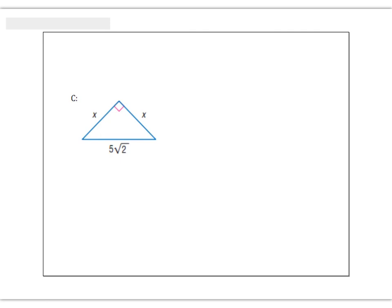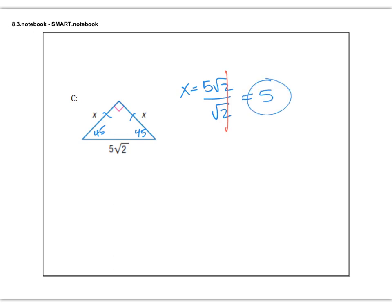Let's try one more. Again, I see the two sides are congruent because they're both length x, which means the two corners have to be 45 degrees and 45 degrees. I'm going to have to work backwards — we're given the hypotenuse. So we're going to take 5 root 2 divided by root 2. When we work backwards, we divide. This one's really cool because they cancel, and we are left with just plain old 5. That is the exact answer and the rounded answer — there's only one answer in this case.